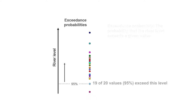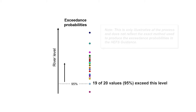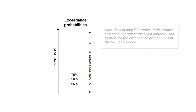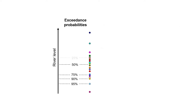For example, 19 of the 20, or 95% of the ensemble members, are equal to or exceed the second smallest river level in this ensemble. Following this logic, there are a range of probabilities for exceeding various river levels.